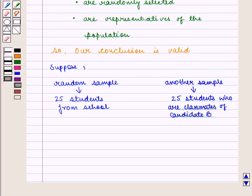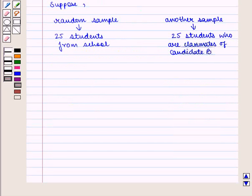Then there will be a lot of variation in both the samples. Then it is obvious that students of 2nd sample will favor candidate B. This means in selecting 2nd sample we have given some preference to candidate B, so our conclusion will not be valid.